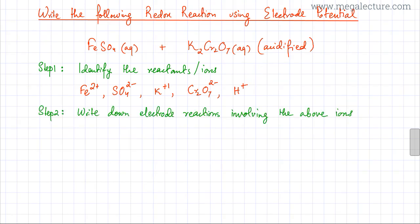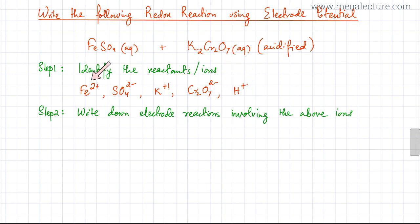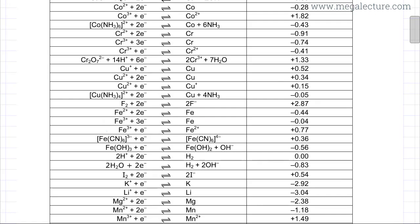Moving to step 2, I need to write down the electrode reactions involving the above ions. I need to open the data booklet and write down all electrode reactions that involve these reactants. Starting with Fe2+, looking at the data booklet, there's one electrode where Fe2+ gains two electrons and gets converted to Fe — an equilibrium established between Fe and Fe2+.